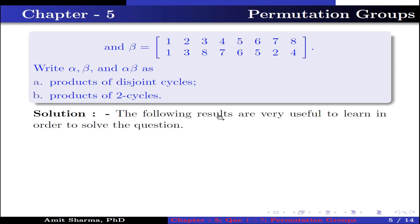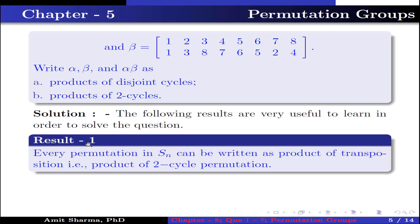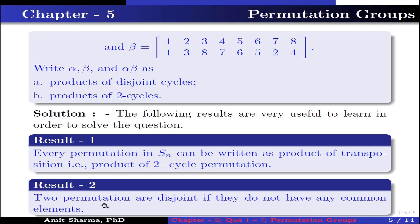The following results are very useful. Result 1: every permutation in Sn can be written as a product of transpositions, i.e., product of 2-cycle permutations. Result 2: two permutations are disjoint if they do not have any common element.